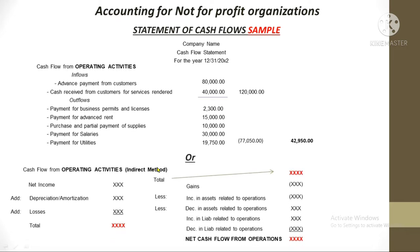The indirect method starts with net income and you add or deduct certain items. I will not detail the indirect method in this video — I'll discuss preparation of the cash flow statement in a separate series including the concepts on why items are added or deducted. For now, let me emphasize again that NPOs follow the same concepts and computations as for-profit organizations.